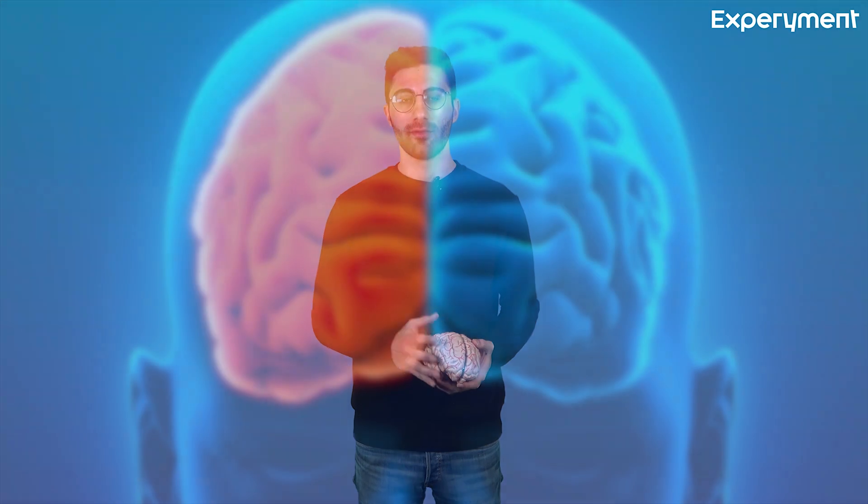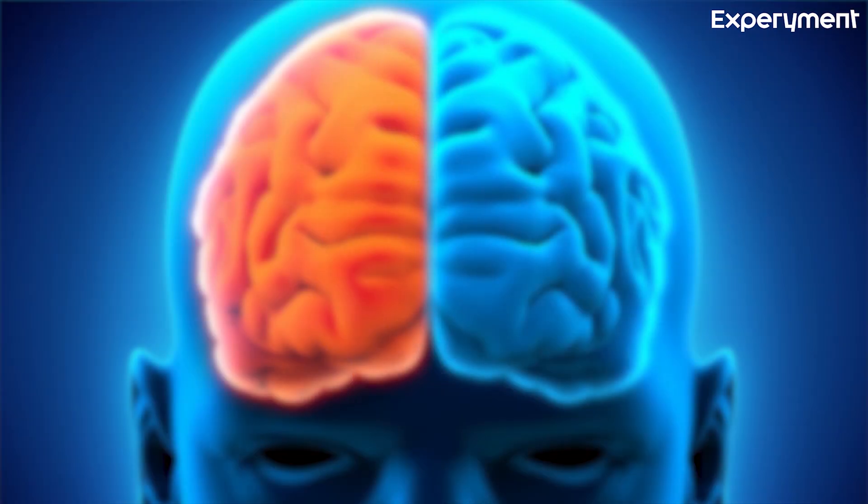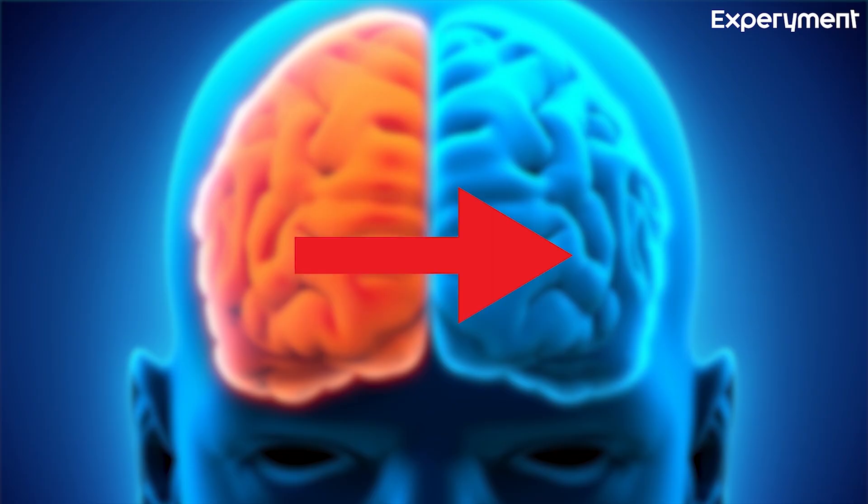The areas of the brain connected with language are usually much more developed in one brain hemisphere than the other. Therefore, this is called the dominant hemisphere. In about 95% of all people, the left hemisphere is the dominant hemisphere.